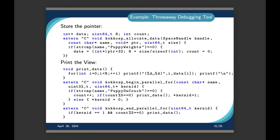So basically what I can do right now with Kokkos is say: this kernel that I submitted a while back — is it complete? And if so, do something else. Yeah, you can't do that yet; that's something we are working on. But if there is demand, then that has higher priority for us to implement.